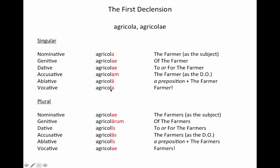Of course, you can have multiple farmers, so you have the same idea, just endings for the plural — for multiple farmers as the subject, as possession, the indirect object, the direct object, the object of a preposition, and direct address.